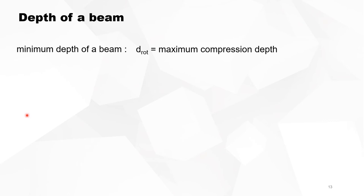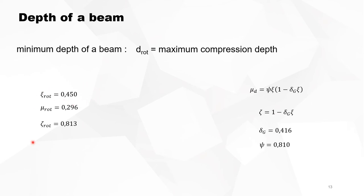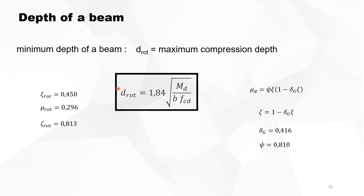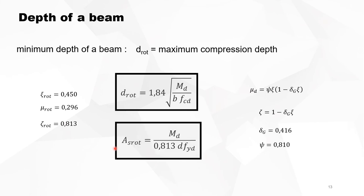There is also a minimum depth due to rotation capacity — the depth at which the compression zone is at its maximum allowed value. We know from this strain plane that µD for rotation capacity is 0.296, and performing the same exercise, the effective depth that allows rotation capacity is 1.84 times the square root of the relevant expression, with a corresponding reinforcement.